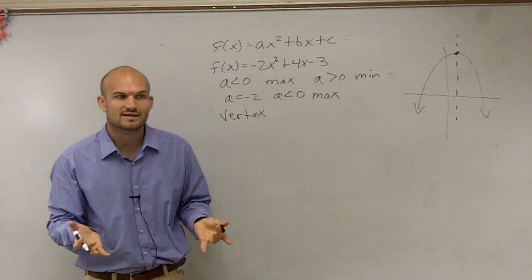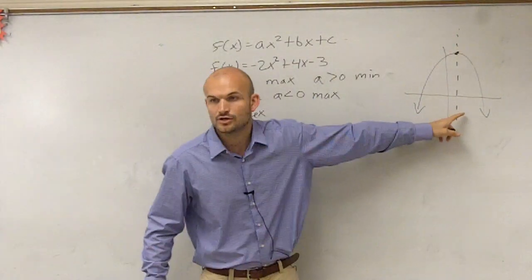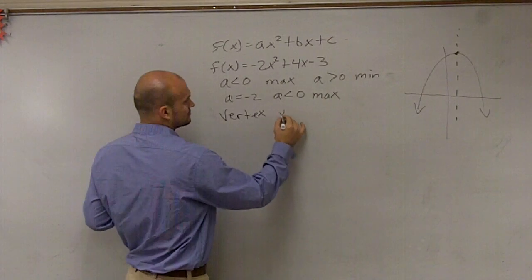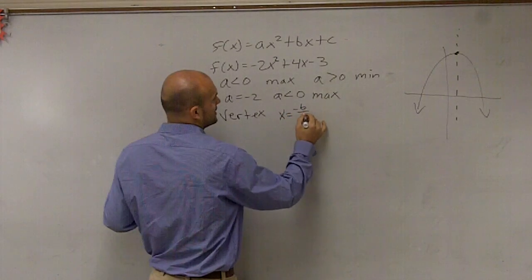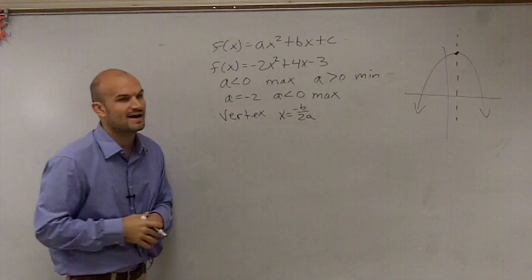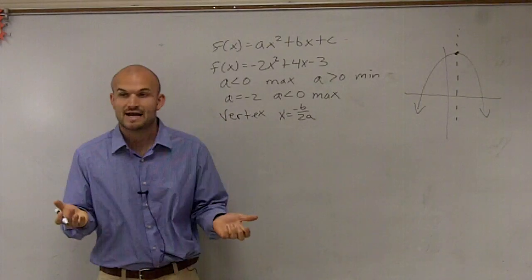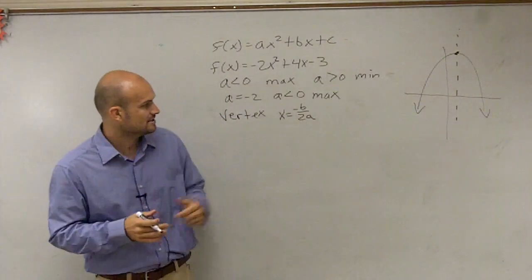And remember, we talked about how to find the axis of symmetry. It's a vertical line. The first point is you need to write opposite of b over 2a. So to find the x value of my vertex or my maximum value is opposite of b over 2a.